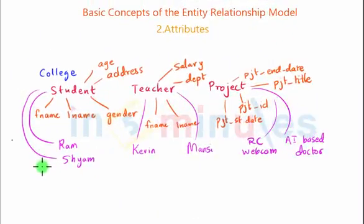So continuing with the previous discussion, attributes, which is the second basic concept of the entity relationship model, we will now try to define an attribute. So an attribute is a property of an entity.